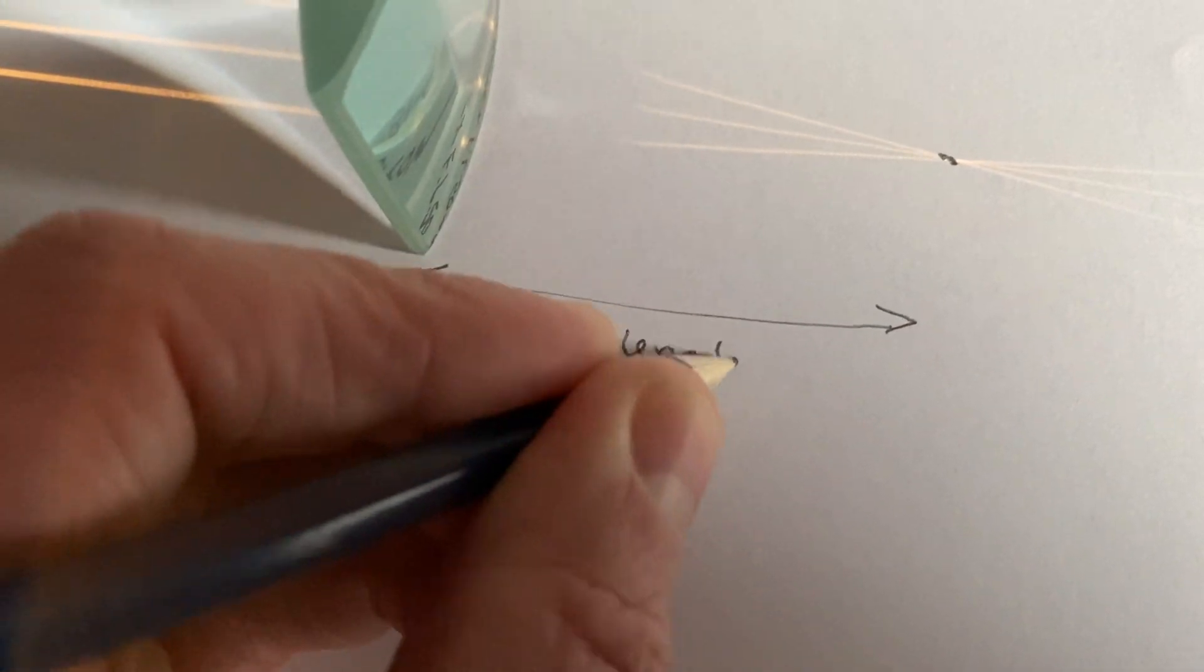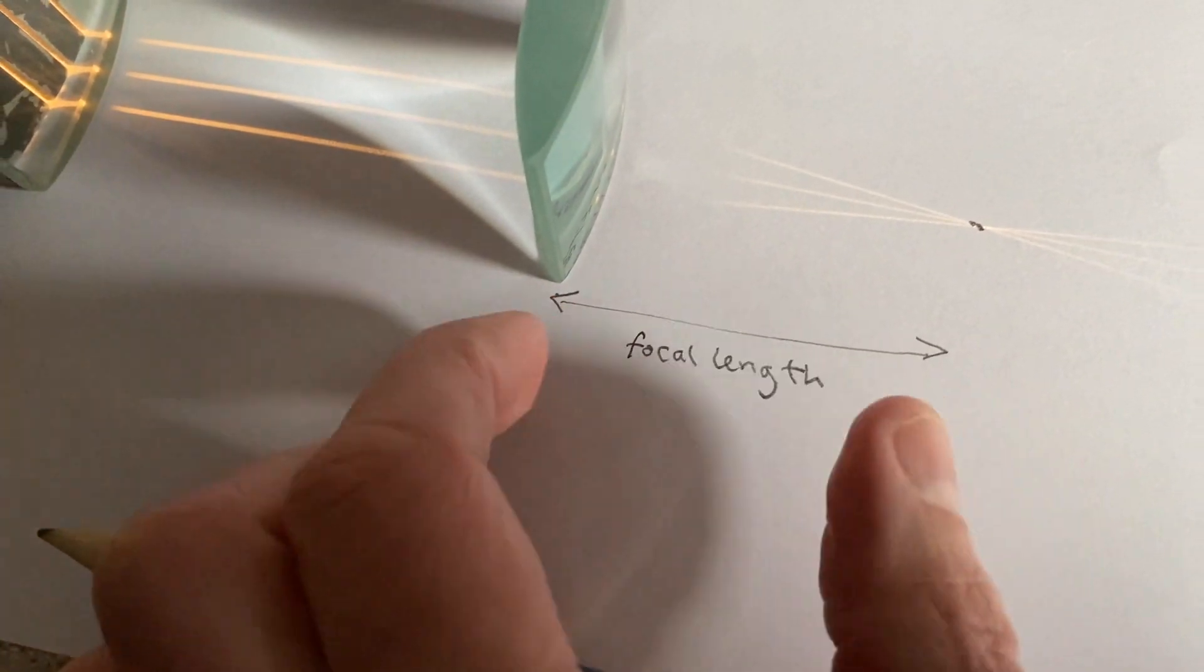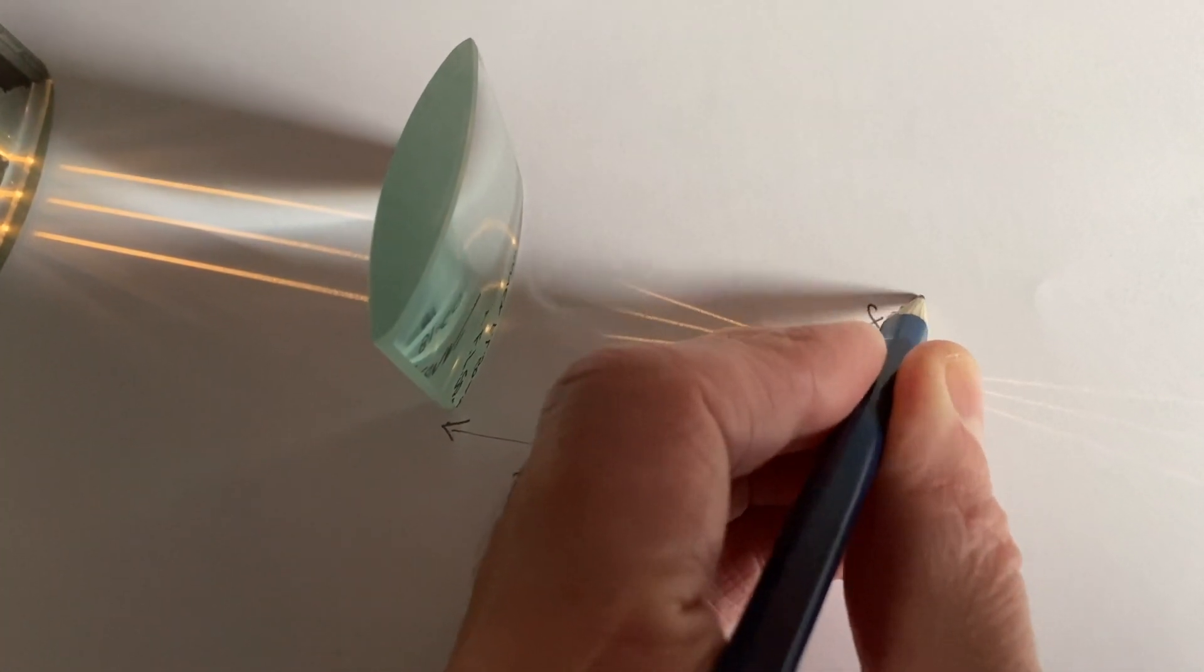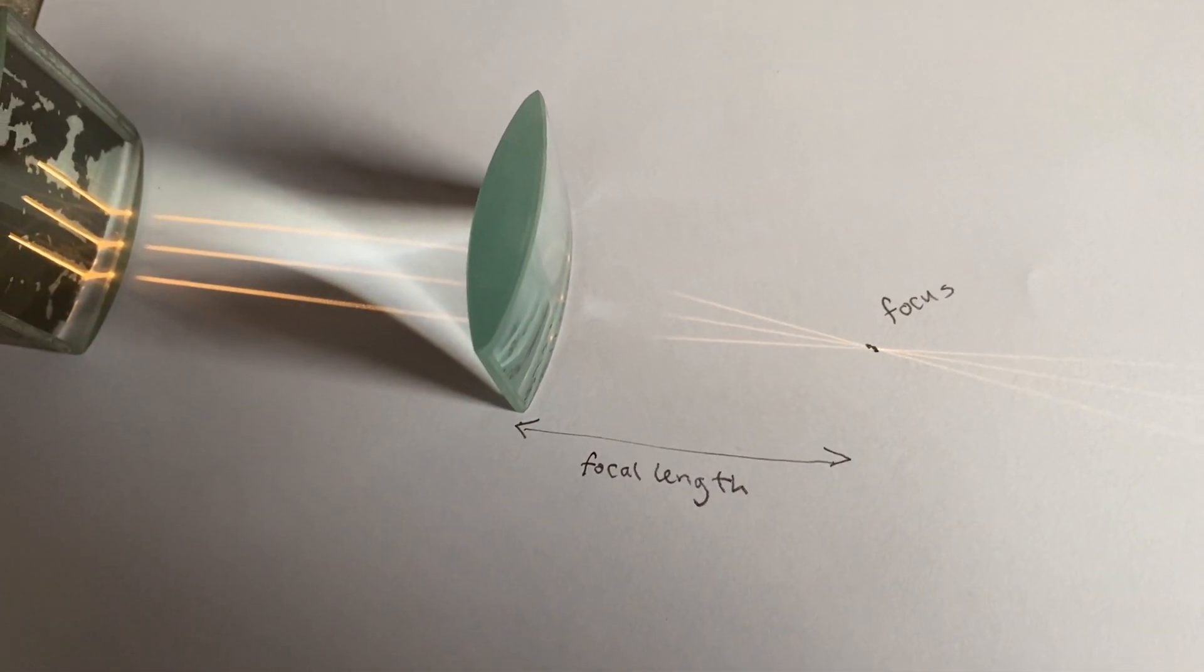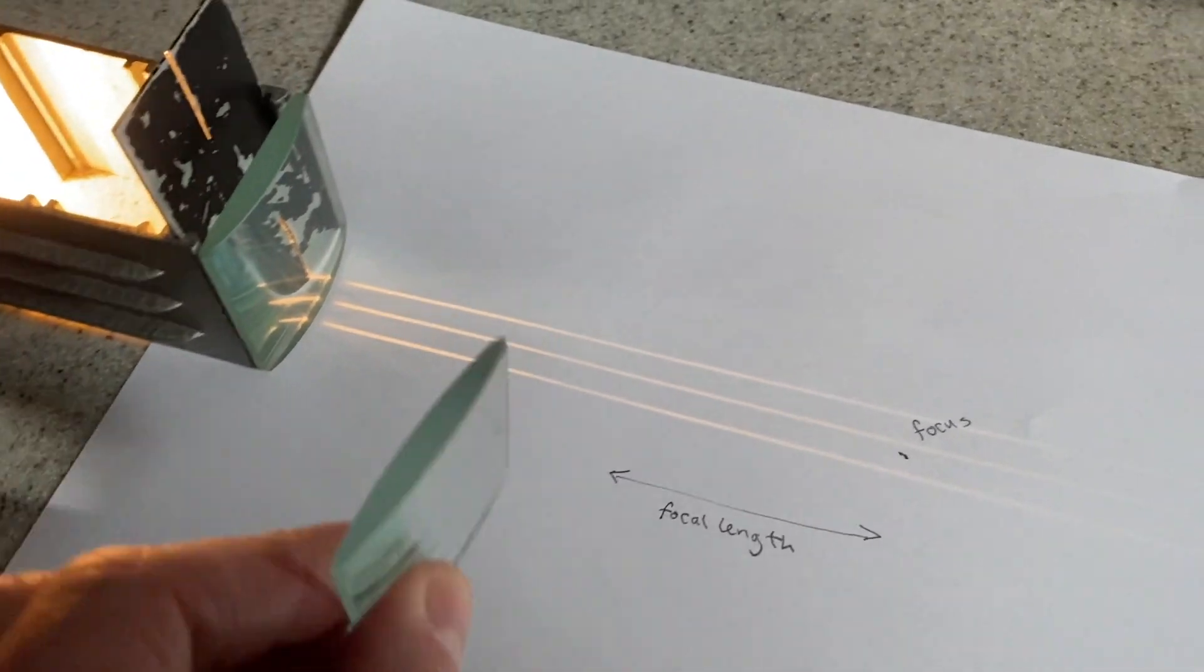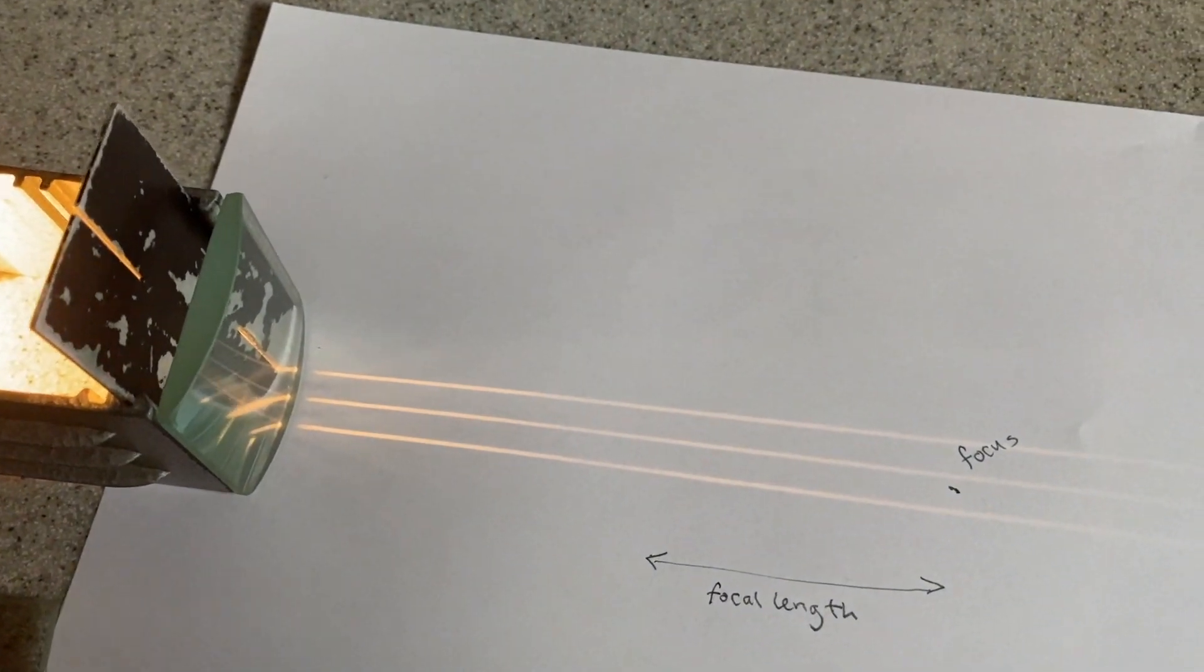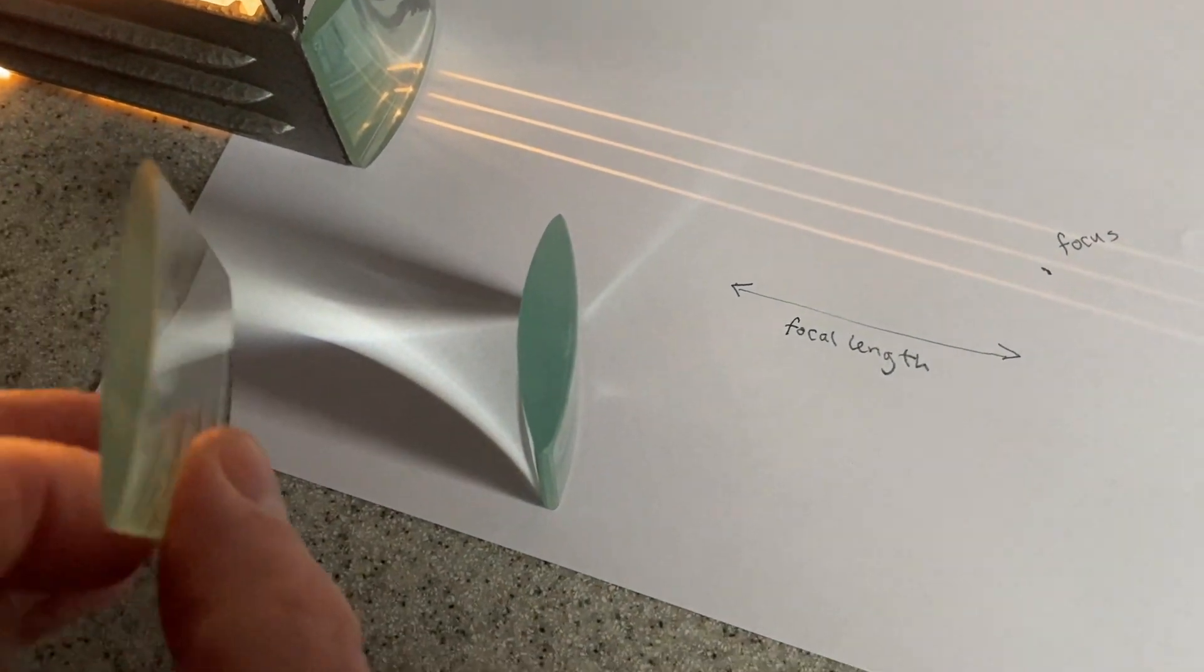That's quite a thick lens. And therefore, it has quite a short distance from the lens to the focal point of the focus. Let's call that focus. If I was to repeat that with a thinner convex lens, let's see what happens. I have a thinner convex lens. If we compare that with its pal, there's the original one we use. And here, the next one we use. It's much thinner.